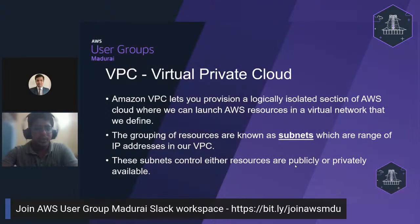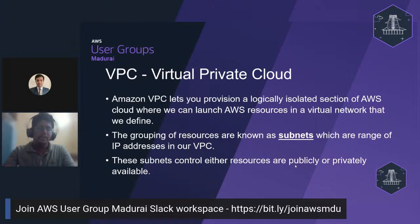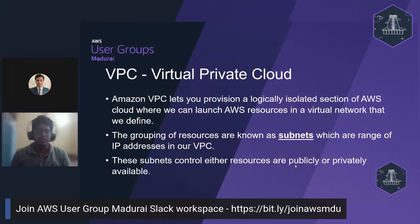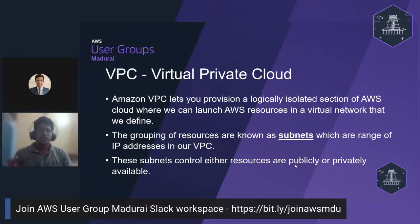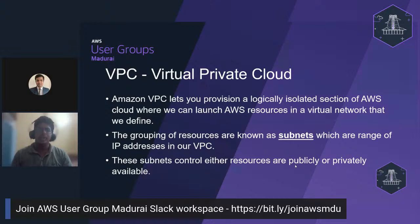VPC stands for Virtual Private Cloud. Amazon VPC lets you provision a logically isolated section of the AWS Cloud, where you can launch AWS resources in a virtual network that you define. A virtual private cloud is just a separation of resources from your actual organization. You can group your organization's resources as public or private resources — these groupings are known as subnets, which are just ranges of IP addresses in your VPC.